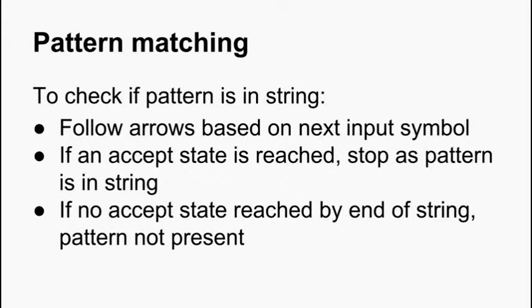So once you've constructed your state machine, it's really quite easy to do the pattern matching part. You simply traverse through the finite state machine following the transitions corresponding to the next input symbol. And if an accept state is ever reached, then you output. And you know at the end that the pattern was found in the string because you've outputted something.